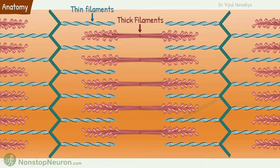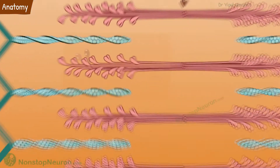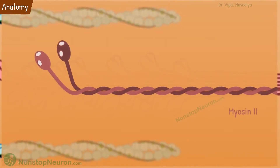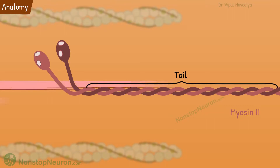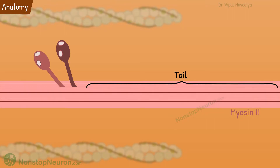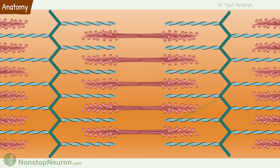Thick filaments interdigitate with thin filaments. They consist of many myosin 2 molecules. Myosin has a tail where all the myosin molecules are connected, and a cross-bridge region that extends out. The cross-bridge has a globular head and an arm.